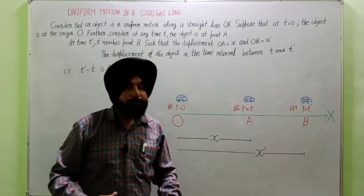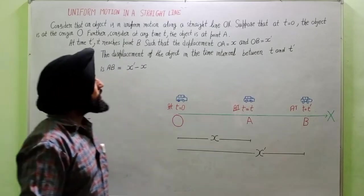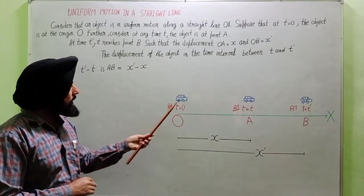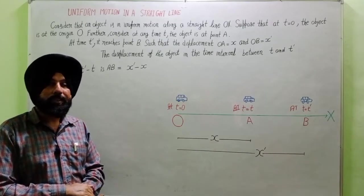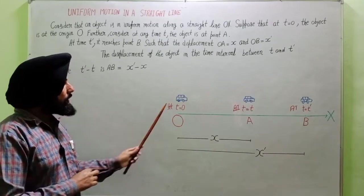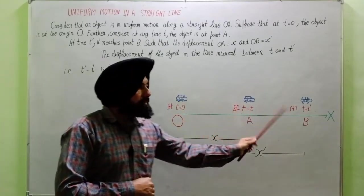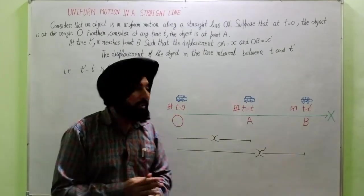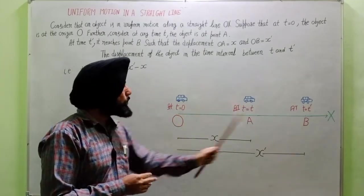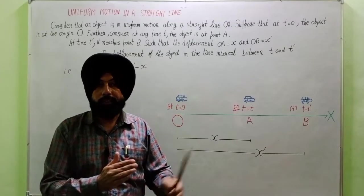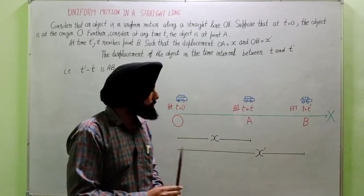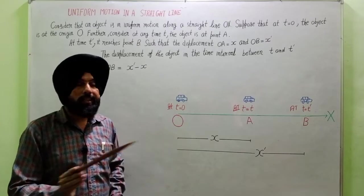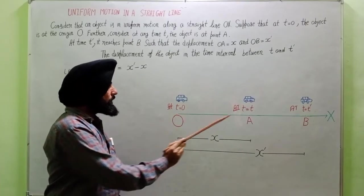Now consider a car in uniform motion along the x-axis. We consider from O to x in uniform motion. At time 0, the object is at the origin.